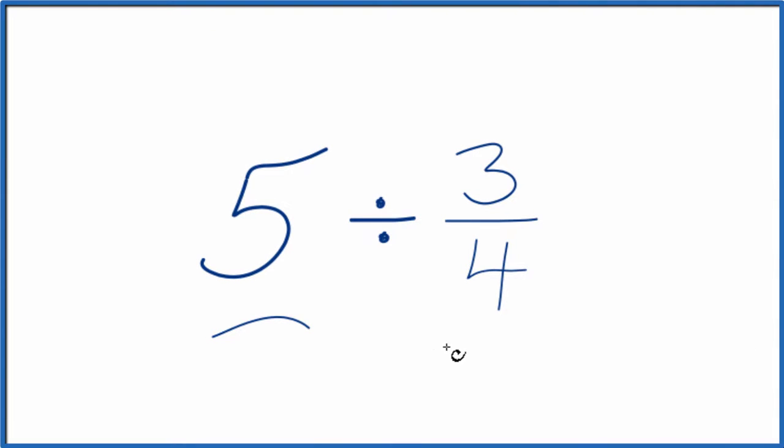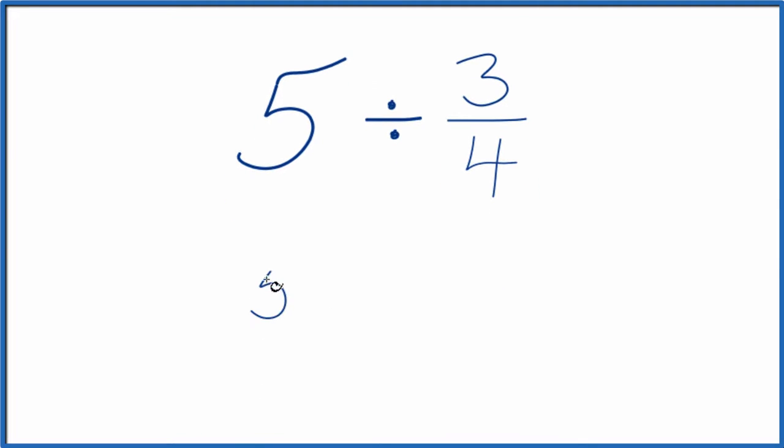If you need to divide 5 by 3 fourths, here's how you can do that. So let's call this 5 over 1. It's still 5, we're just dividing by 1, but this gives us a fraction. That'll make this easier.